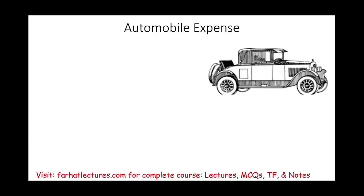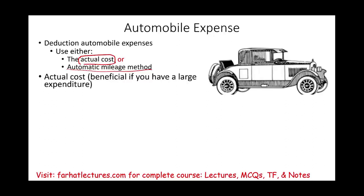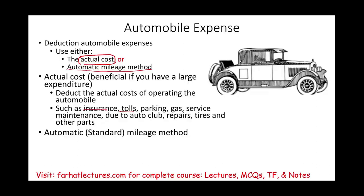Let's talk about automobile expense deductions. You could either use the actual cost method or the automatic mileage method. With actual cost, if you had a large expenditure that year, actual cost might be more beneficial. You deduct the actual cost of operating an automobile, which includes insurance, tolls, parking, gas, service maintenance, AAA membership, repairs, tires, and other parts. You keep track of those, and depending on the percentage you use the vehicle for business, that portion is deductible.